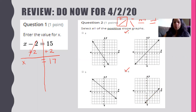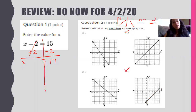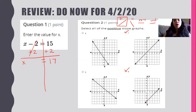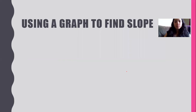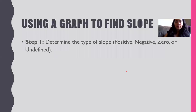That's reviewing your Do Now so you know what you got right, what you got wrong, and how to do better next time. If you go back into that folder on Schoology you can always retake it. Our lesson for today is using a graph to find slope.